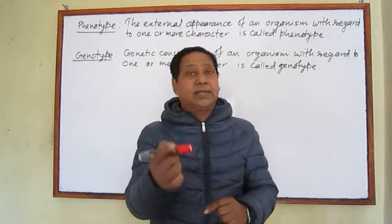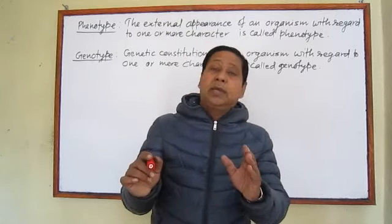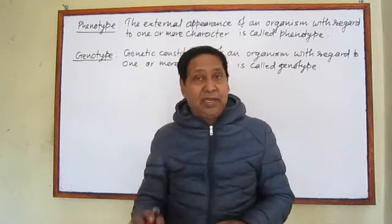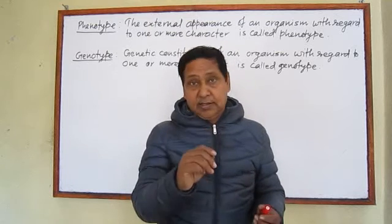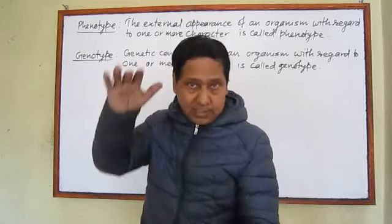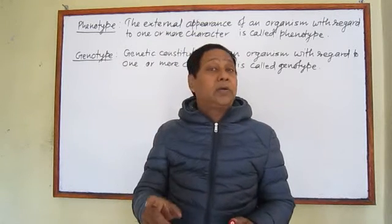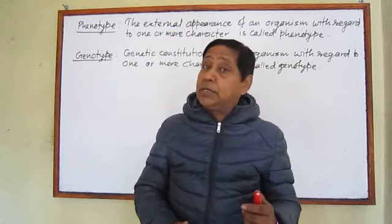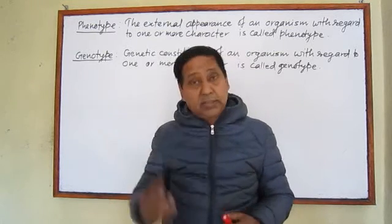Sometimes we are talking about only one character — that is height. But sometimes we will say: this is a tall pea plant having yellow seed. It means we are talking about two characters phenotypically — the plant is tall and the seed color is yellow. The external appearance of an organism with regard to one or more characters is called phenotype.